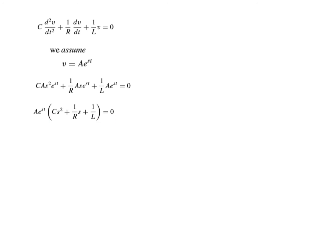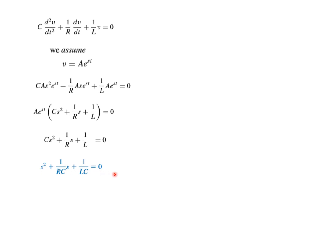Factoring out A·e^(st), since this is our assumed voltage it cannot be zero, so the term in the bracket must equal zero. Dividing by C gives us the characteristic equation, which is a second-degree binomial equation.